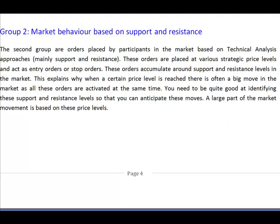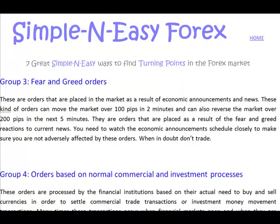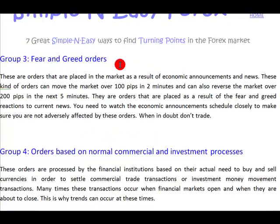Support and resistance identification can be done using horizontal and non-horizontal support principles. Then we have the third group of orders, which are based on fear and greed. These happen when new economic announcements are made or news enters the market — the market becomes fearful or greedy and can sometimes move hundreds of pips. A good example is the monthly payroll announcements in the U.S., which have the ability to move the market over 100 pips in two to three minutes.